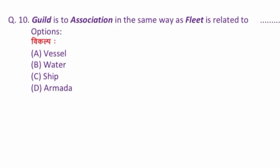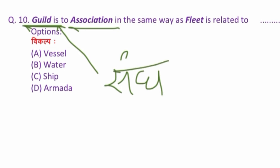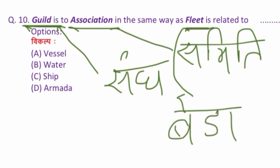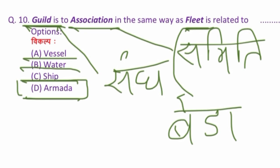Question number ten: Guild is to association in the same way as fleet is related to — options: vessel, water, ship, armada. Guild means 'sang' (guild/union) and association means 'samiti' — both mean a group/organization. Fleet means 'beda' (a group of ships). Vessel means a ship, water means pani, ship means jahaj, and armada means 'jahaj ka beda' (a fleet of ships). So armada is the correct answer, as fleet and armada both mean a group of ships.